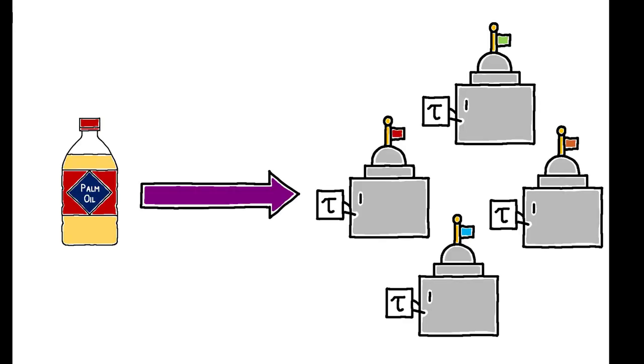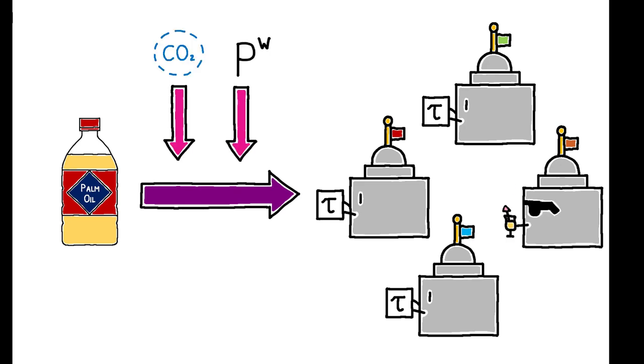The problem is that coordination is difficult to achieve. Countries that defect get to free-ride on the emissions reductions and lower prices induced by the coalition.